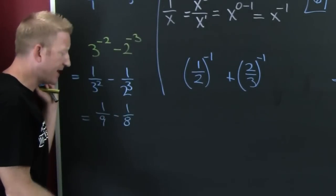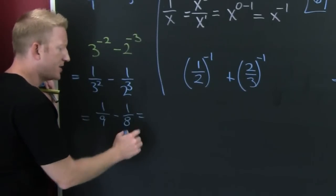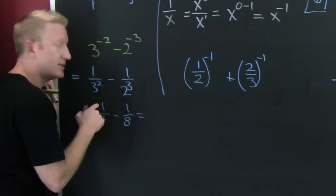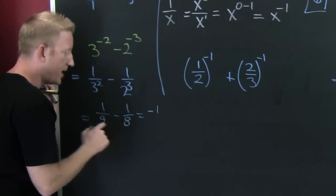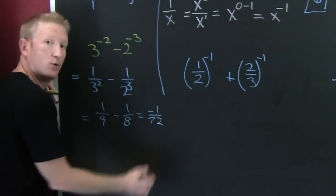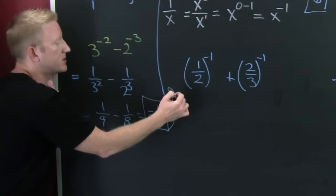This isn't an exercise in adding fractions, so I'm just going to do it for you. This is 8 minus 9, which is a minus 1, divided by 72. And we added those fractions quite quickly. Go check out the videos about adding fractions. I think I have one with pizza.